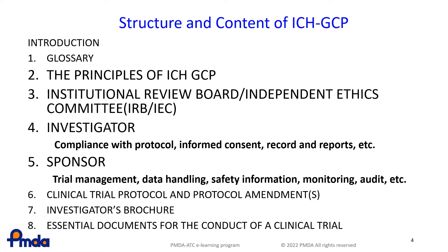This slide shows the contents of ICH GCP. The main points are Sections 2, 3, 4 and 5. Section 2 lists the principles of ICH GCP. Section 3 describes the Institutional Review Board, IRB, introduced after the Declaration of Helsinki. This section stipulates the responsibilities and roles of the IRB, as well as the procedures of its establishment. The IRB plays a very important role to ensure the rights, safety and well-being of subjects of clinical trials.